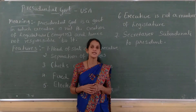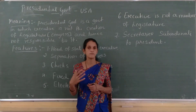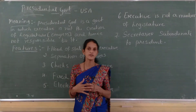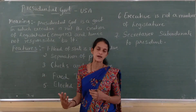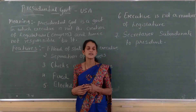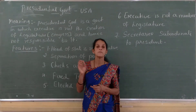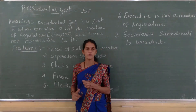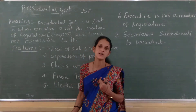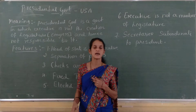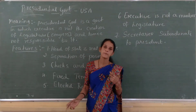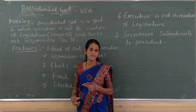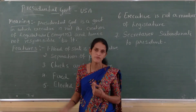In parliamentary form of government, parliament or the legislature enjoys unlimited power — the ultimate powers are vested in the hands of parliament. Likewise, in the presidential form of government, the supreme powers are vested in the hands of the president. The president enjoys unlimited or supreme powers in the presidential form of government.